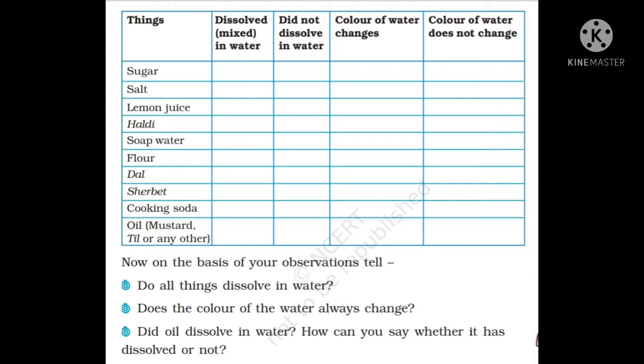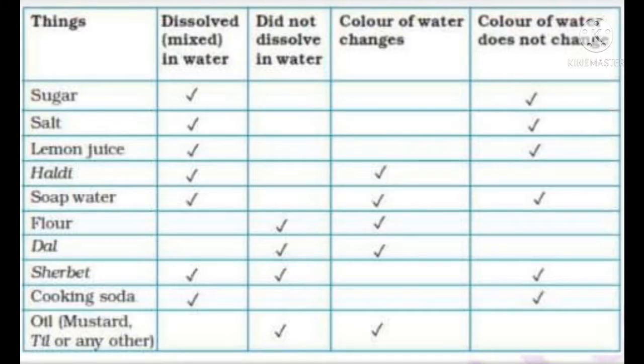Sugar, salt, lemon juice, and cooking soda get dissolved in water and do not change the color. Haldi dissolves in water but changes the color to yellow. Soap water sometimes changes the color and sometimes does not. Flour does not dissolve in water and changes the color. Dal does not dissolve in water and changes the color. Sherbet dissolves in water but does not change the color. Oil does not dissolve in water, but it changes the color of water.